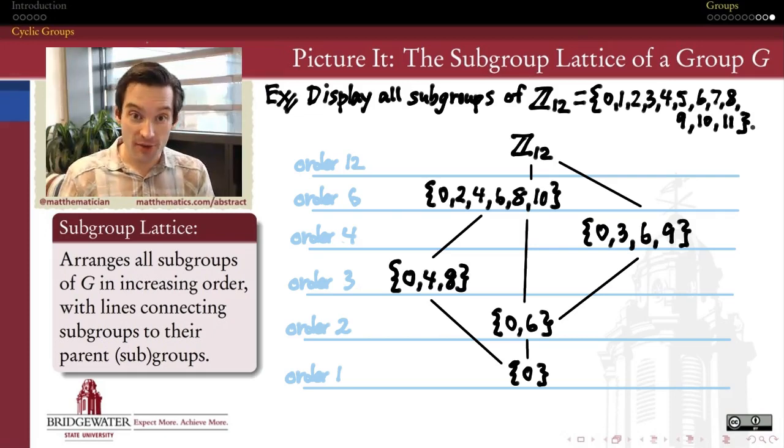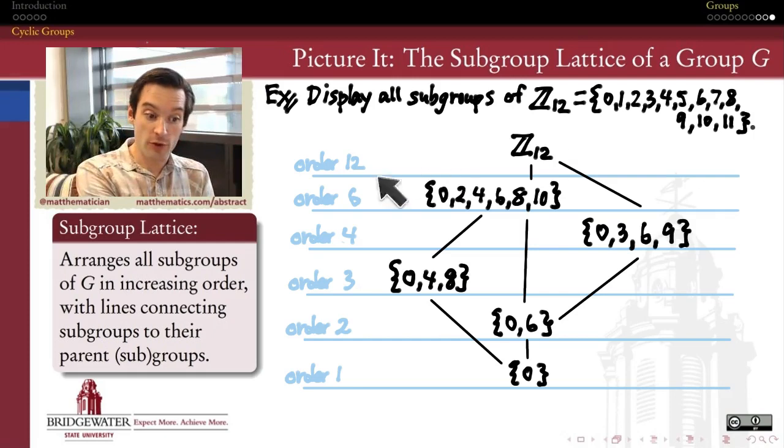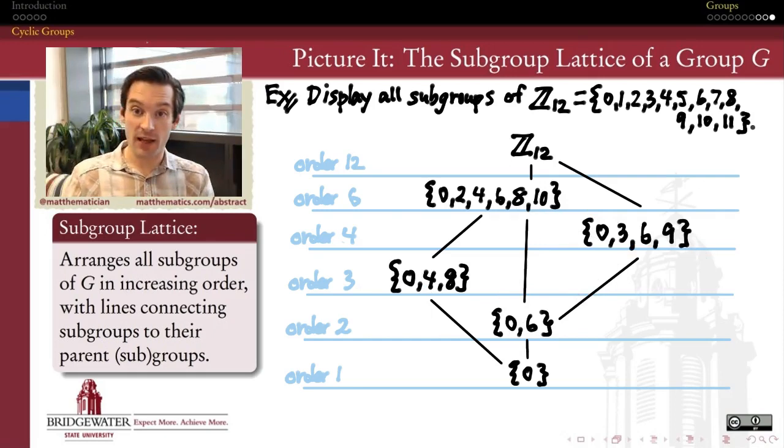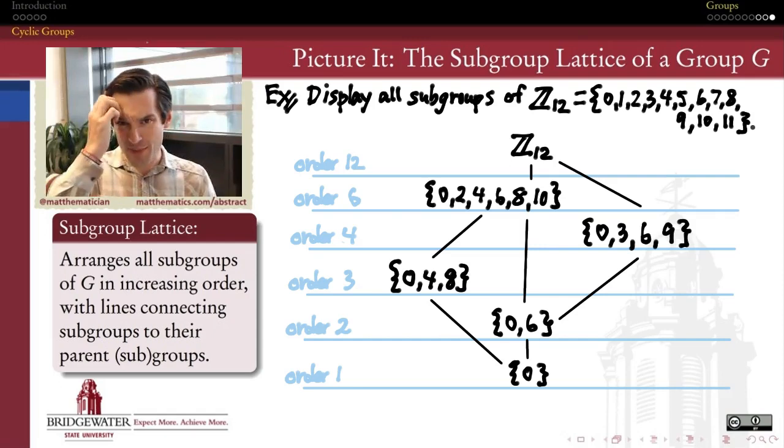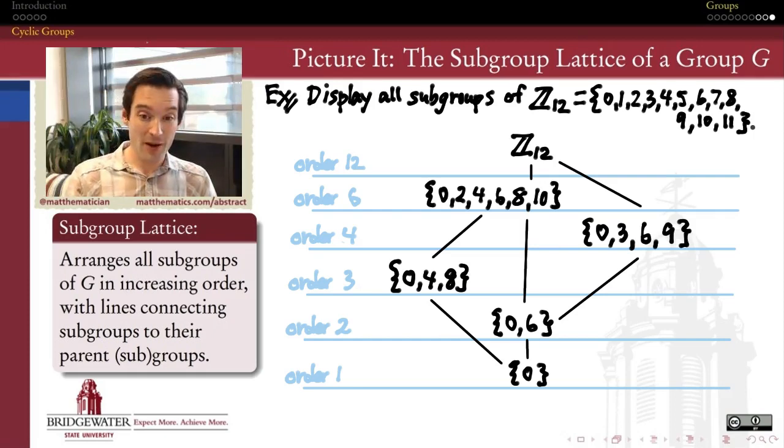The theorems that we have about cyclic groups are enough for us to do this subgroup lattice process with absolutely any cyclic group. We can use the principles that we've learned in these videos to come up with a complete list of all the subgroups that a cyclic group has. In a very real sense, this collection of videos was both the beginning of a story about cyclic groups, but also kind of an end of a story about cyclic groups, at least as far as the finite cyclic groups are concerned. Once we understand the subgroup lattice of a group, we understand a ton about how that group is put together.